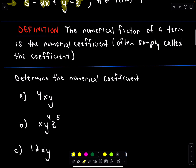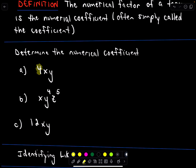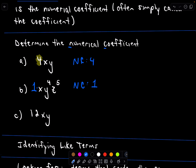The numerical factor of a term is called the numerical coefficient — it's whatever number you see. For 4xy, the numerical coefficient is 4. For x times y to the fourth times z to the fifth, I don't see a number, but we could multiply by 1, so the numerical coefficient is 1. And for 12xy, the numerical coefficient is 12.